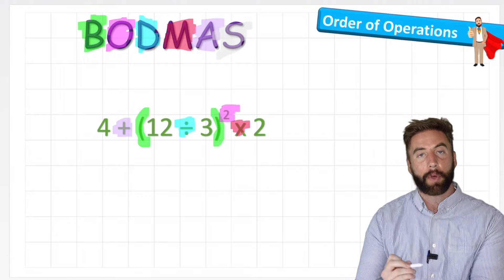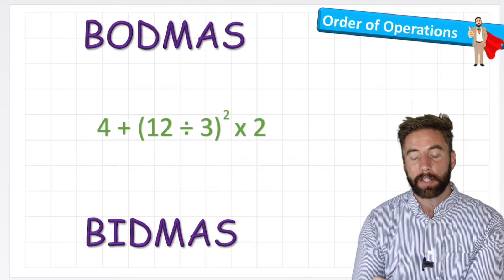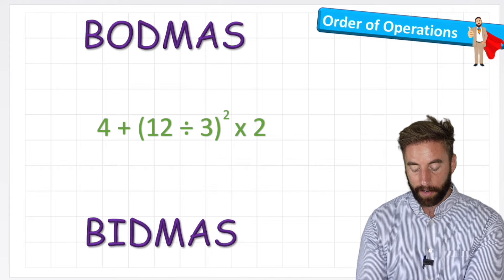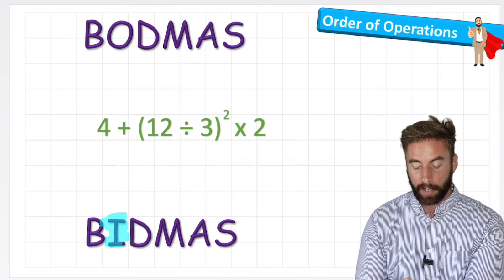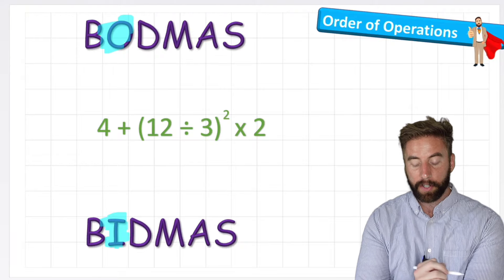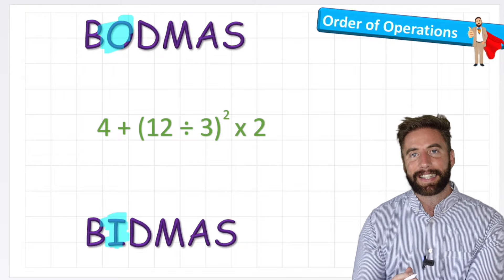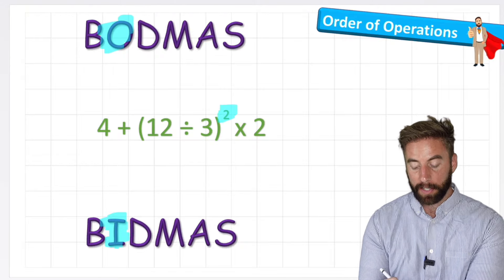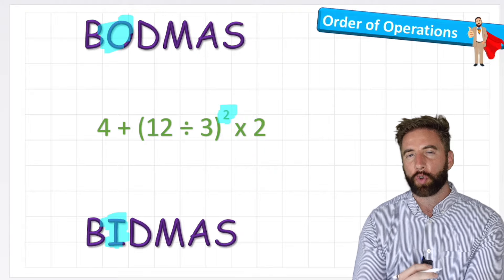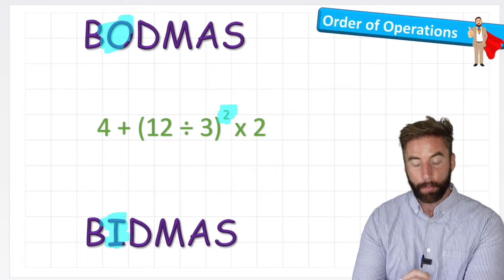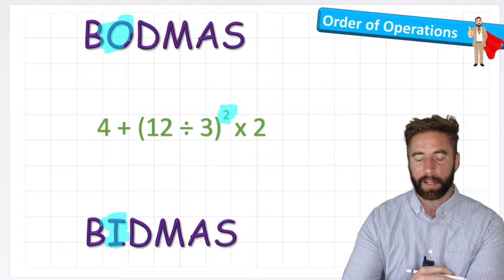But in this case, we don't have any subtraction, but that would come last. Now, in some instances, you might see BIDMAS down here, where the I and the O are different. And in BIDMAS, it just means index. Same principle. It still means this power of 2 here, but it's just taught differently in different places. So BODMAS, BIDMAS, exactly the same thing.